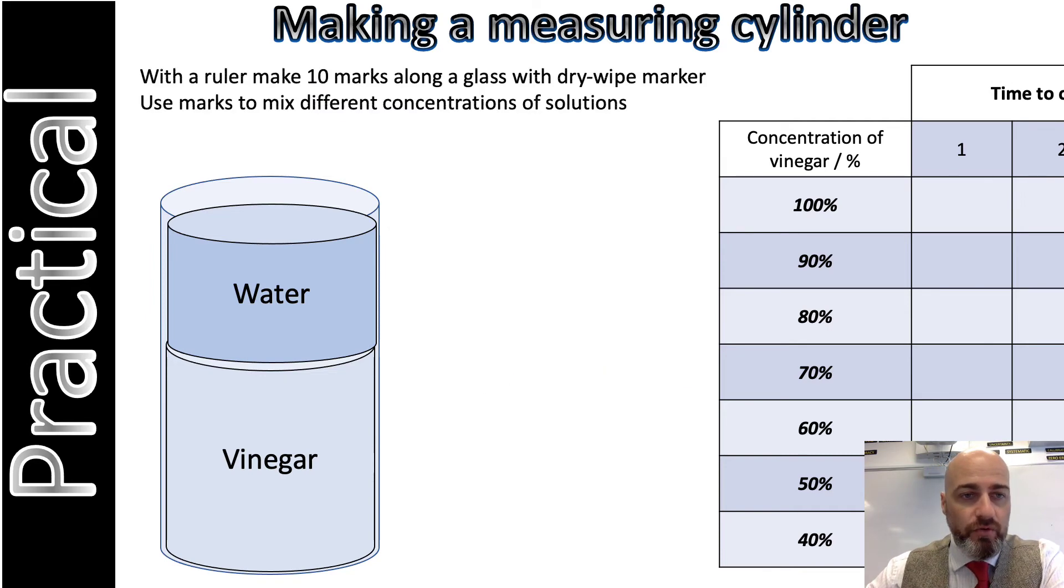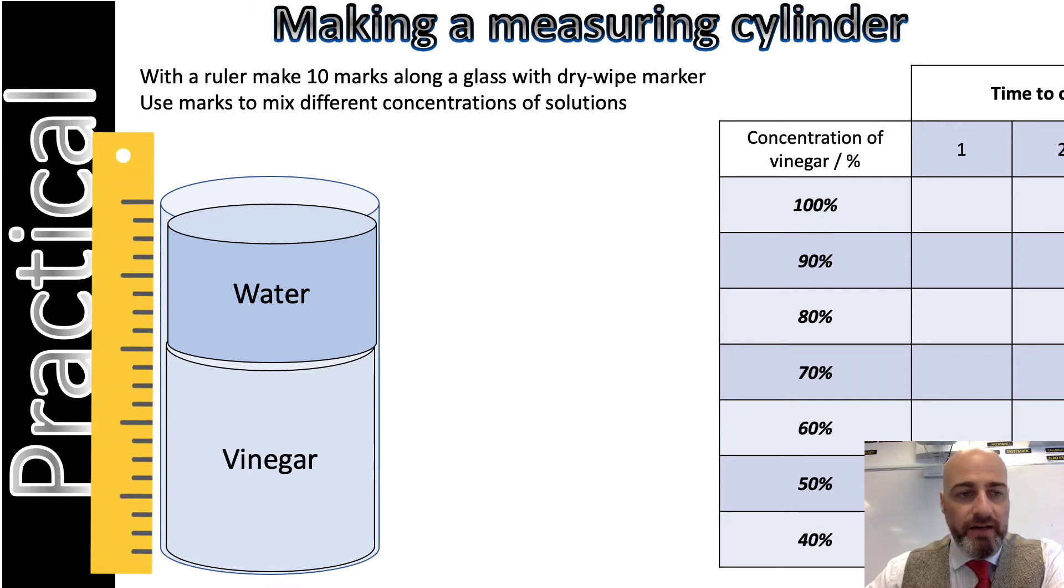So right now, what you will need to do is get a dry wipe marker and a ruler and what you're going to do is you're going to measure equal intervals, maybe one centimeter, maybe half a centimeter, whatever you want to do. And this will enable you to mix up different concentrations.